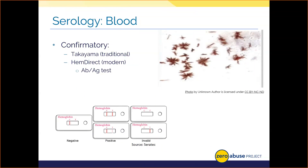Laboratories have generally moved away from the Takayama confirmatory test for a few important reasons. First, Takayama chemicals are carcinogenic — cancer-causing — and it's too dangerous to continue asking a lab analyst to use this method when safer alternatives exist. We also used to have to confirm blood was human beyond Takayama, taking an extra step using antibody-antigen tests that were not historically reliable and added a whole day of waiting time. Most labs have since invested in the HemeDirect test from Sartorius.